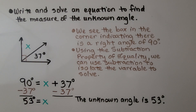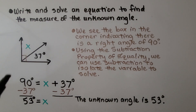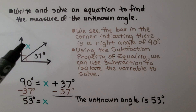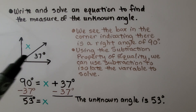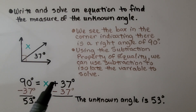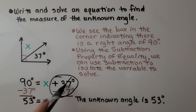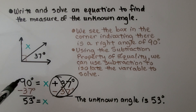Here we write and solve an equation to find the measure of the unknown angle. We see the little box in the corner indicating this is a right angle of 90 degrees. Using the subtraction property of equality, we write: 90 degrees equals x plus 37 degrees. We see the plus sign, so we subtract 37 degrees from both sides. That creates a zero pair and eliminates the plus 37. We get 53 degrees, so x is equal to 53 degrees. The unknown angle is 53 degrees.